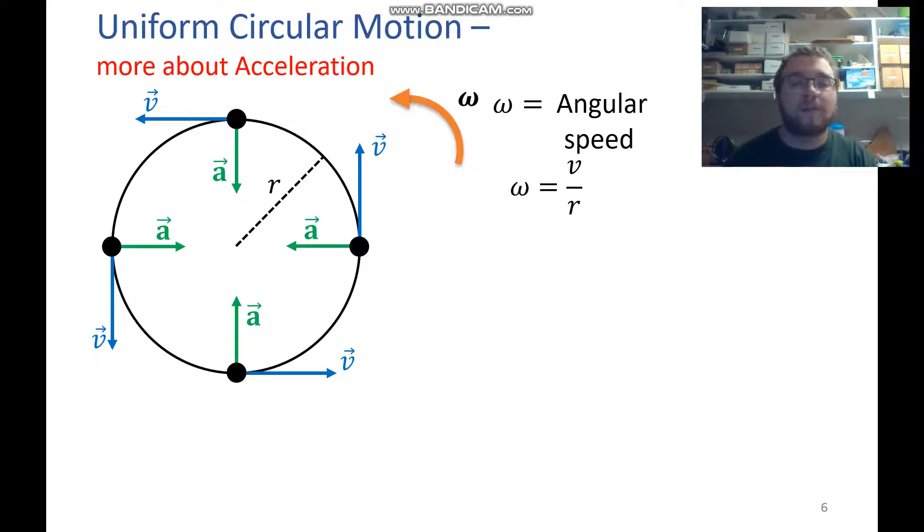That's a lowercase omega. And we can calculate it by dividing the speed by the radius. So that's the magnitude of the velocity vector divided by the radius.